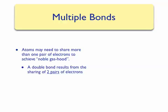Two atoms can form a double bond between them if they share two pairs of electrons. A simple example is the diatomic molecule oxygen — two oxygen atoms must share two pairs of electrons between them so that each oxygen atom has a noble gas electron configuration. Remember that each line drawn in the double bond represents two electrons; counting electrons around each oxygen atom yields eight, giving each a noble gas configuration.